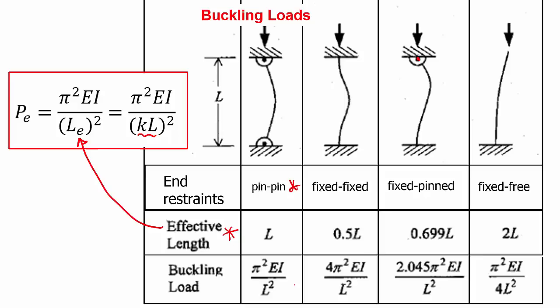In our fixed-fixed condition our column therefore has four times the buckle capacity of our pin-pin case. Our fixed-pinned column here has twice the buckle capacity of the pin-pin case. And finally when considering our fixed-free case the buckle capacity of this column is only a quarter the value of the pin-pin case.